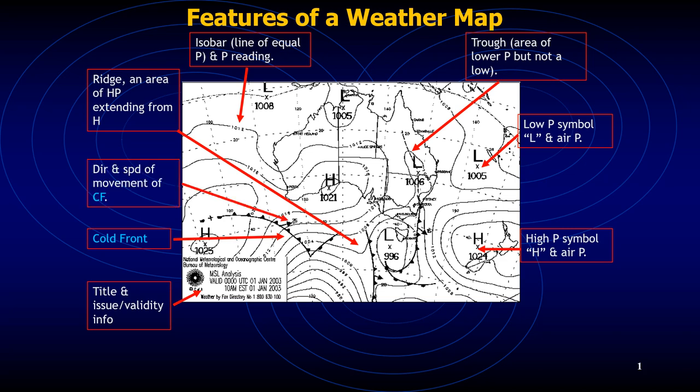You can see here an arrow associated with the cold front, which indicates the direction and speed of movement of the cold front. The speed is mentioned as 25 knots, and the direction you can see is approximately northeasterly.